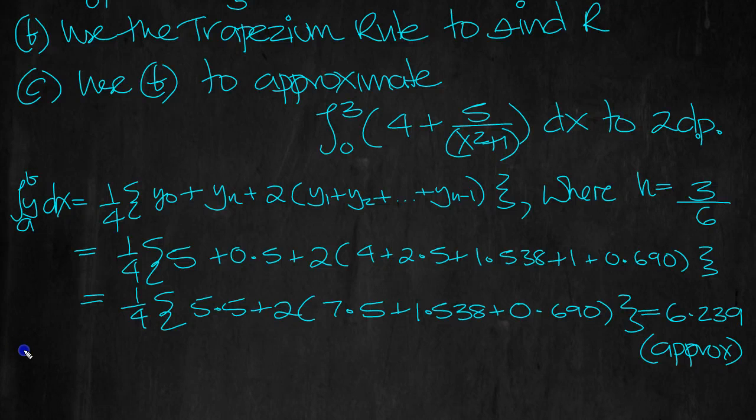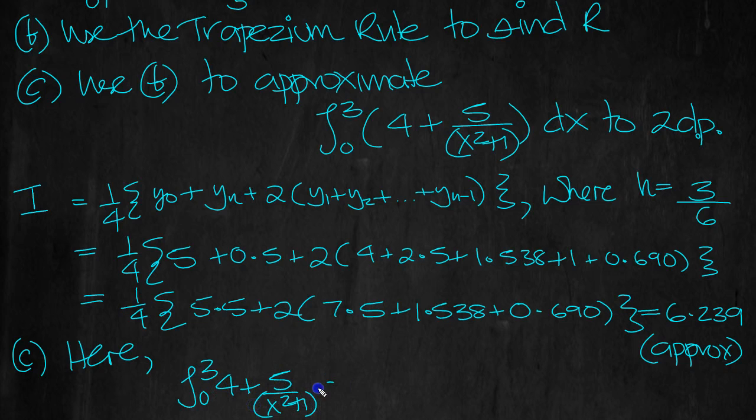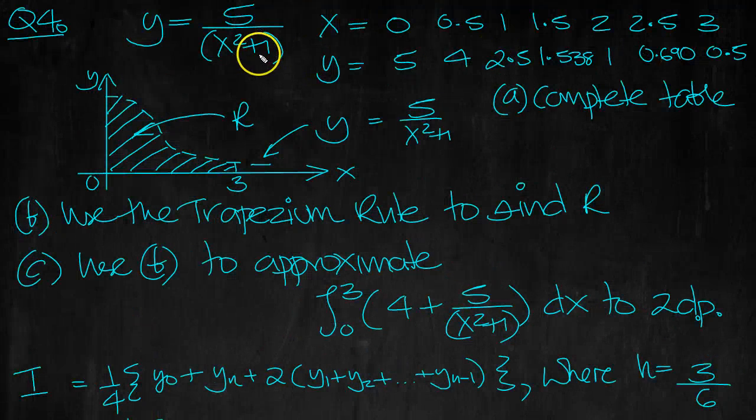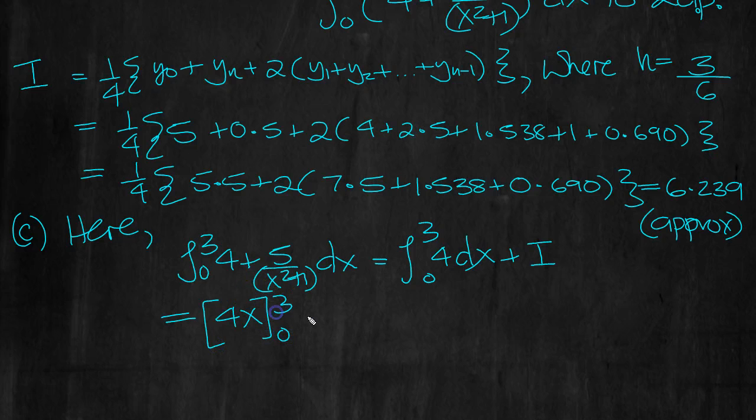Let's have a look at this then. If we label this I, I'll call that I. That was here, integral of 0 to 3 of 4 plus 5 over x squared plus 1 dx, is equal to the integral 0 to 3 of 4 dx plus the second integral, which is plus I. It was 5 over x squared plus 1. Which is equal to, integrate 4x between 0 and 3 plus I.